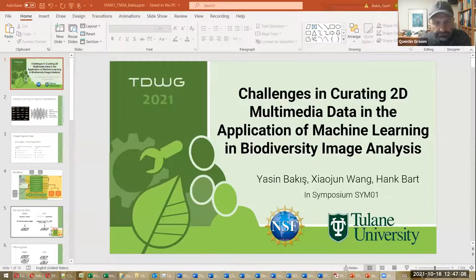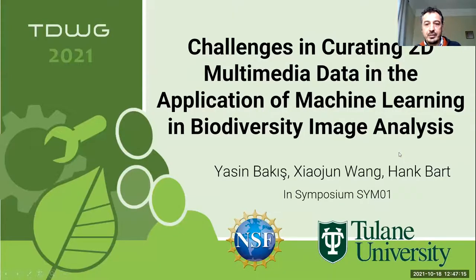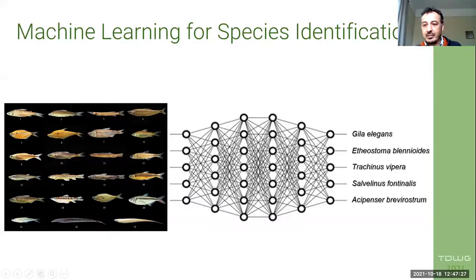The next speaker is Yasin Bakis. I will mention the challenges in creating multimedia data — how to gather those data and how to fix the data. We have an NSF-funded project on PGNN, biology-guided neural networks. Basically what we are doing is gathering and feeding fish images to the neural network to try to make it guess which species it is. Our data is coming from two main image repositories — we are working on fish only, from iDigBio and the Great Lakes Invasive Network project.